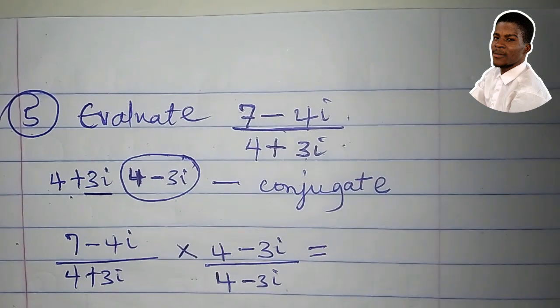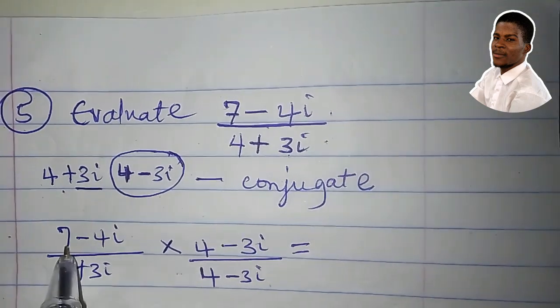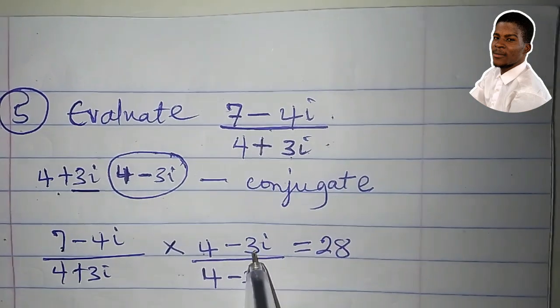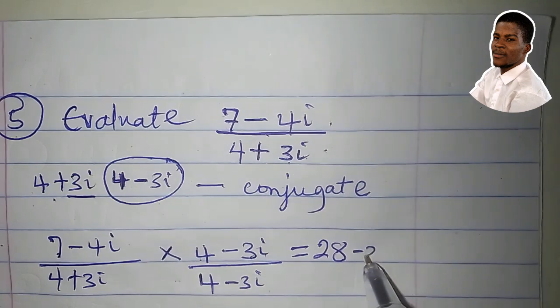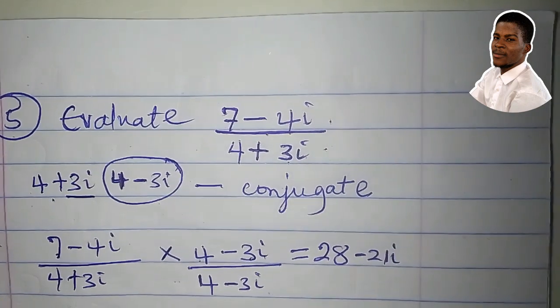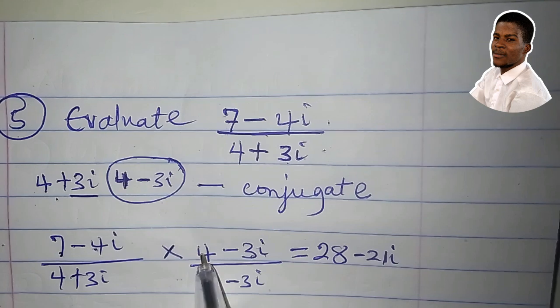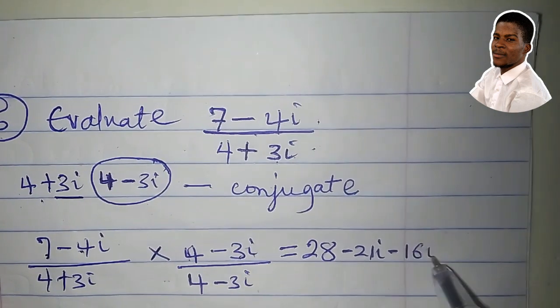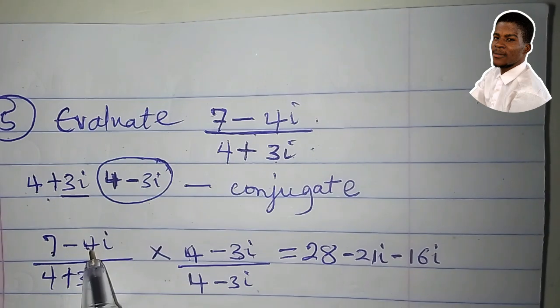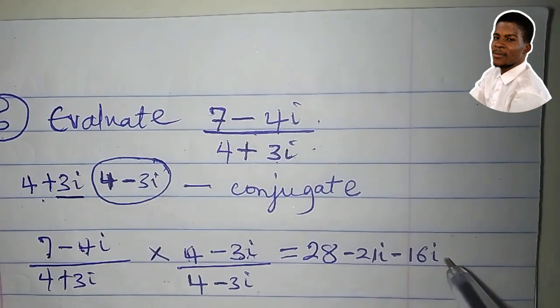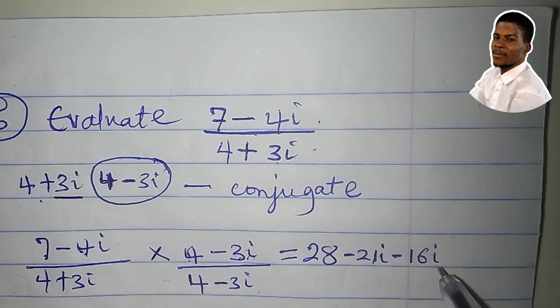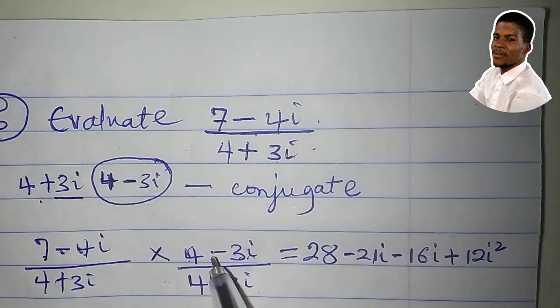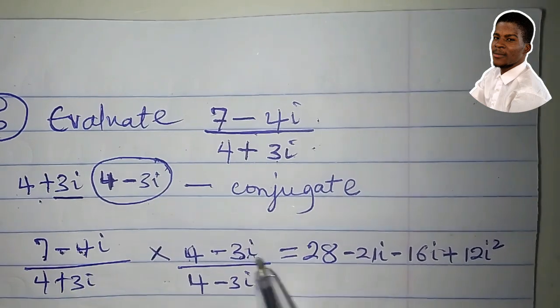So to multiply this, we'll have 7 times 4, that's 28. 7 times minus 3i, that's minus 21i. Minus 4i times 4 is minus 16i. Minus 4i times minus 3i is plus 12i squared. Minus times minus is a plus. 4 times 3 is 12, i times i is i squared.